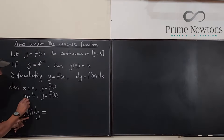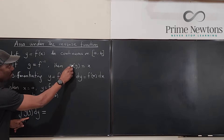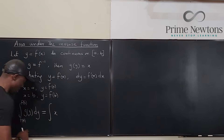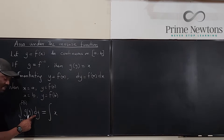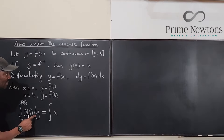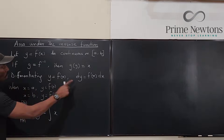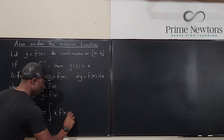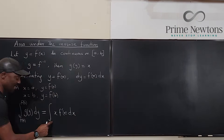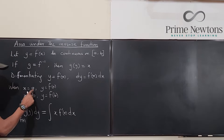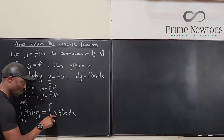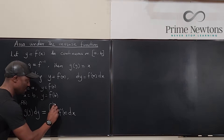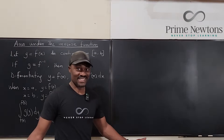Now, g(y) is x — so it's as if we're integrating x. And dy = f'(x) dx. The interval switches back to [a, b] because that's the domain for x. This substitution is the only tricky part, but once you establish this relationship, we know how to integrate it — using integration by parts.